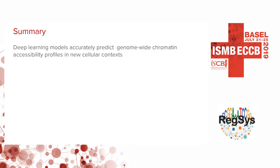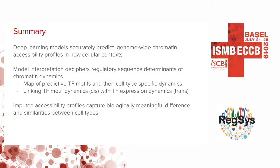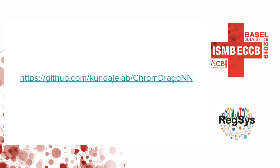In conclusion, deep learning models can accurately predict chromatin accessibility profiles in new cellular contexts. We can interpret and probe these models to identify cis-regulatory sequence features, which can be linked to the expression dynamics of corresponding transcription factors. The imputed accessibility profiles capture meaningful biological differences and lead to meaningful segregation in clustered space.